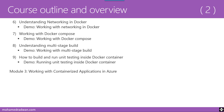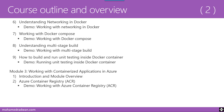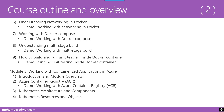Module Three, Working with Containerized Applications in Azure, has several lessons. The first is an introduction and module overview. Lesson Two covers Azure Container Registry — how to provision and work with it — followed by a demo. Lesson Three covers Kubernetes Architecture and Components, explaining the architecture of Kubernetes in detail, both AKS and non-AKS. Lesson Four covers Kubernetes Resources and Objects, going deeper into the different components that construct Kubernetes.